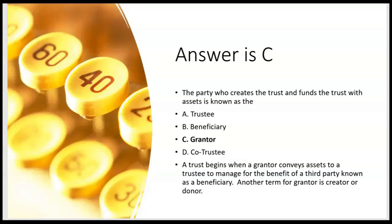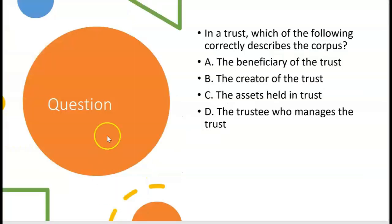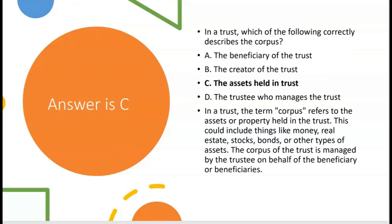In a trust, which of the following correctly describes the corpus? A — the beneficiary of the trust? No. B — the creator of the trust? No. C — the assets held in trust? Yes. D — the trustee who manages the trust? No. Letter C is correct. In a trust, the term corpus refers to the assets or property held in the trust — money, real estate, stocks, bonds. The corpus is managed by the trustee on behalf of the beneficiaries.